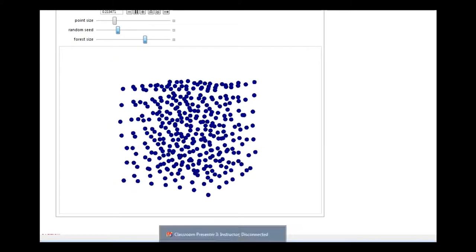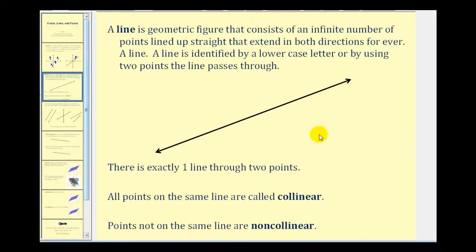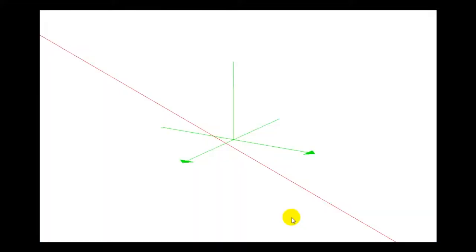Now let's talk about lines. A line is a geometric figure that consists of an infinite number of points lined up straight that extend in both directions forever, as we see pictured here. Notice the arrows on the end indicate that it extends forever. Here's a line graphed in three dimensions to help you get a better feel for a line and how it extends in both directions forever.